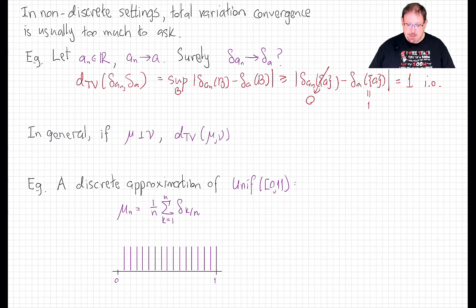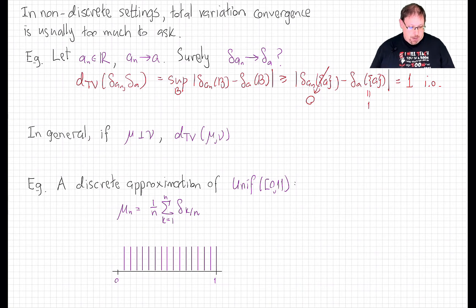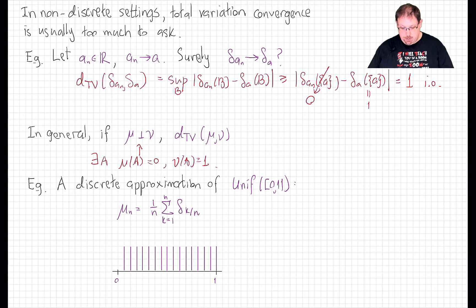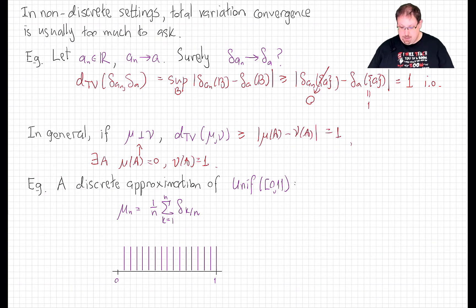This demonstrates an important fact which usually rules out total variation convergence for our considerations. If mu and nu are any two probability measures that are mutually singular, meaning there exists an event A for which mu(A) = 0 while nu(A) = 1, then the total variation distance between them has got to be 1, because it's bounded below by |mu(A) - nu(A)|.